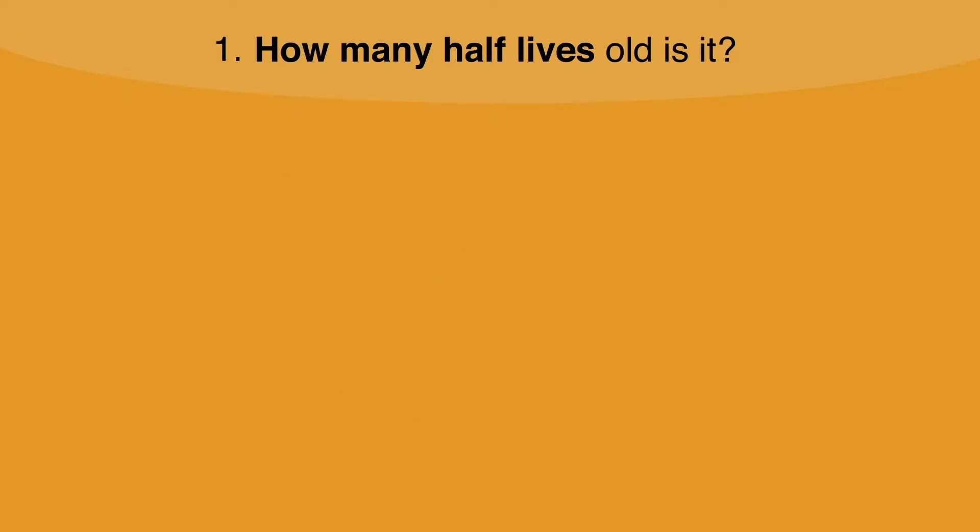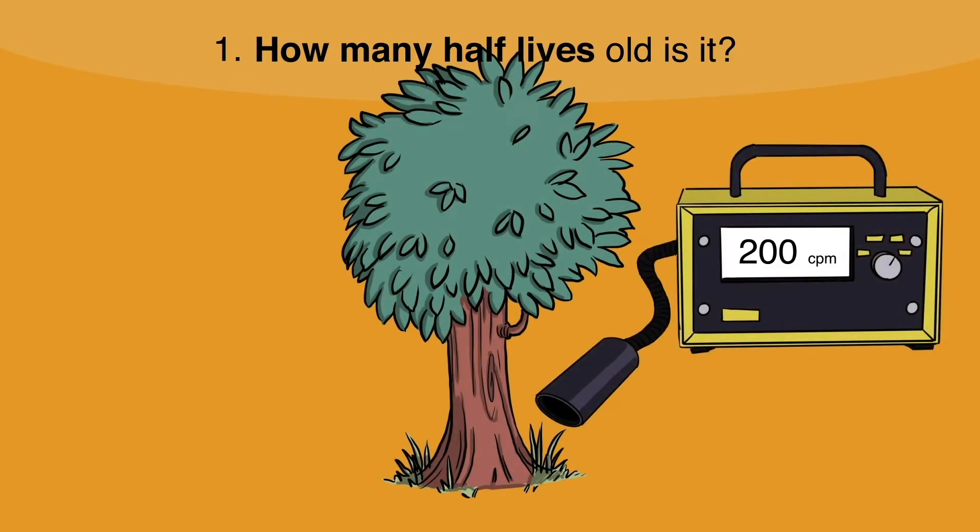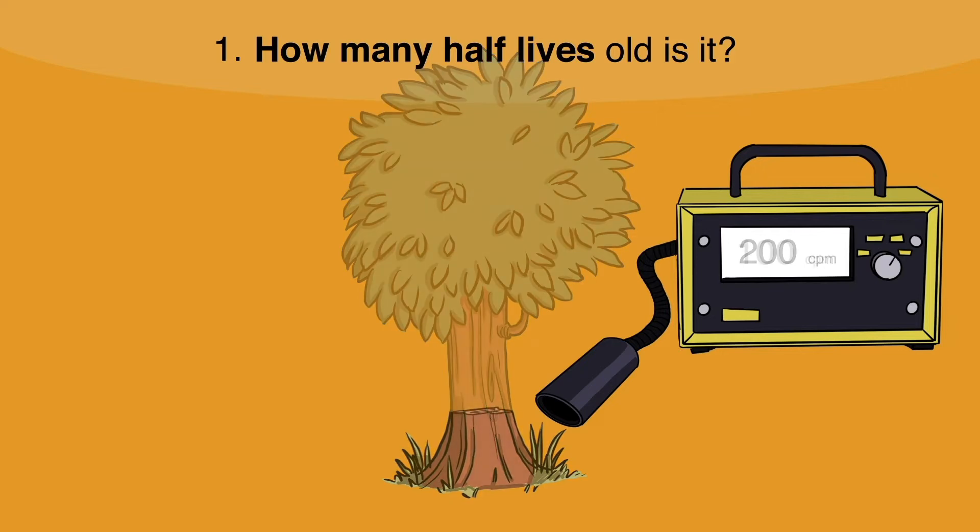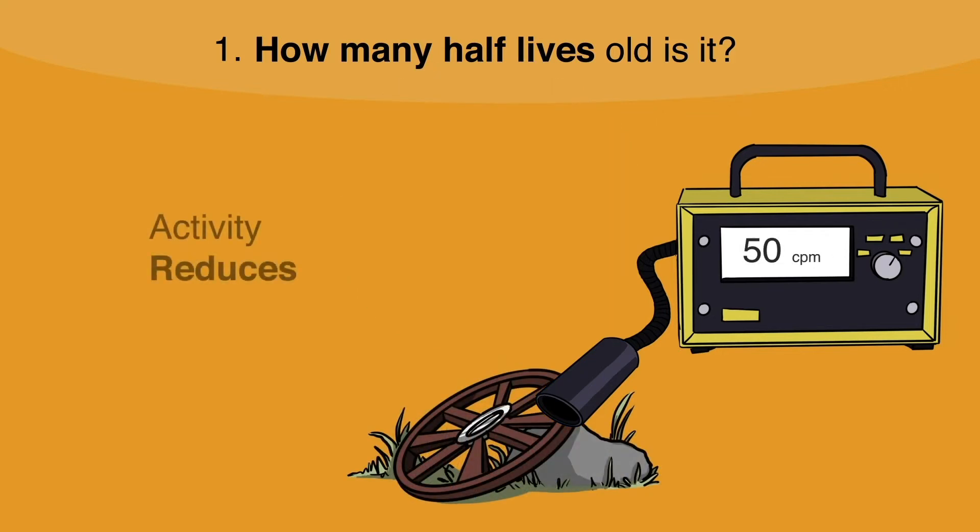How old is the wheel? First, we need to find out how many half-lives old it is. If the count rate of a tree that's alive is 200, then when that tree is cut down and turned into a wheel, that activity will slowly start to reduce.